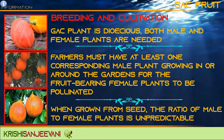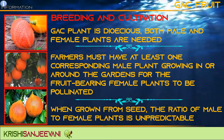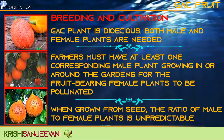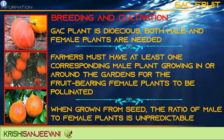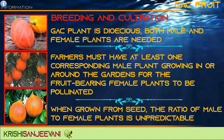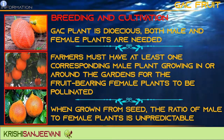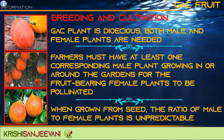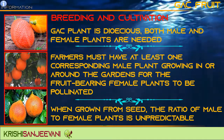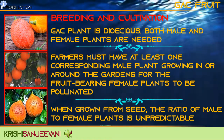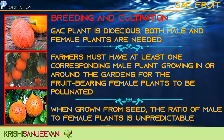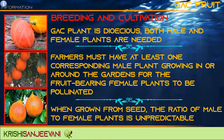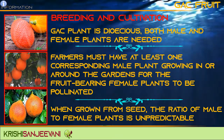Gac plant is dioecious, so both male and female plants are needed. Farmers must have at least one corresponding male plant growing in or around the gardens for the fruit-bearing female plants to be pollinated.